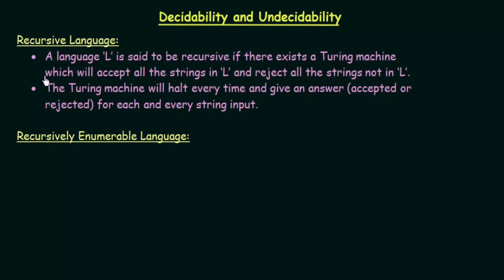The first two definitions we need to know about are recursive languages and recursively enumerable languages. We have already come across these, but let us define them again so that we can understand decidability and undecidability. A language L is said to be recursive if there exists a Turing machine which will accept all the strings in L and reject all the strings that are not in L.